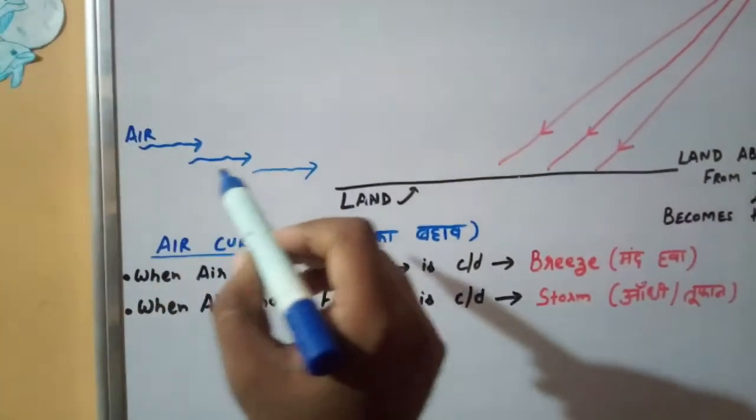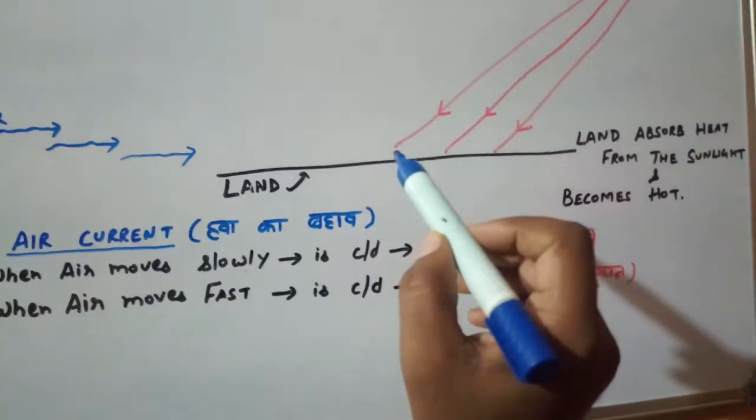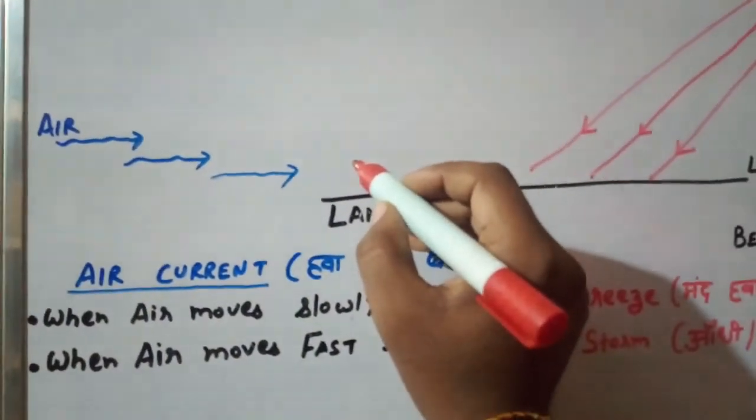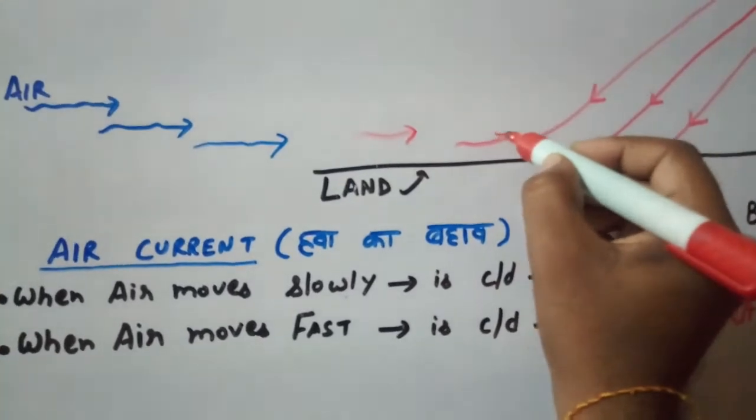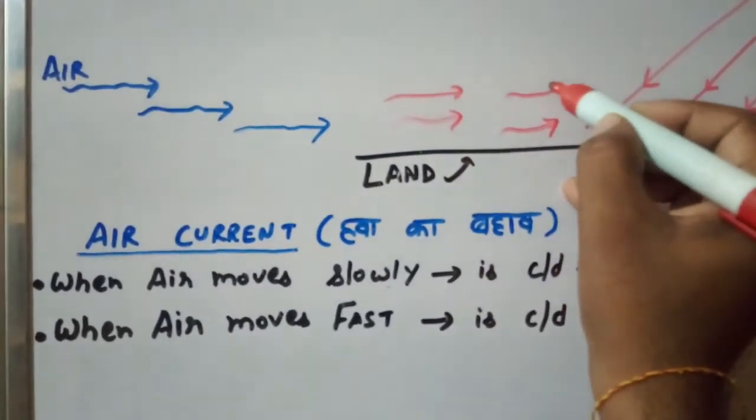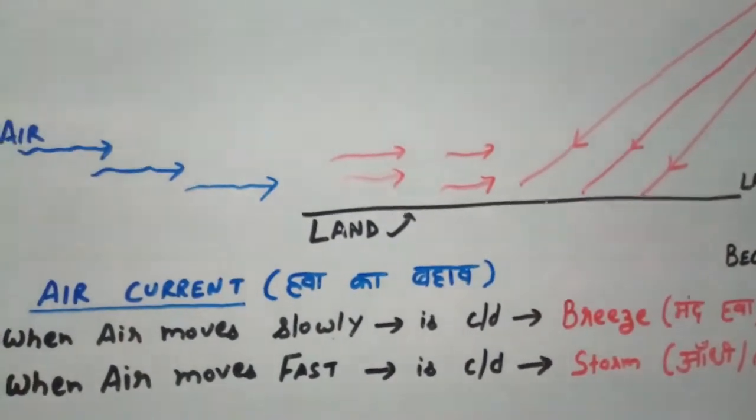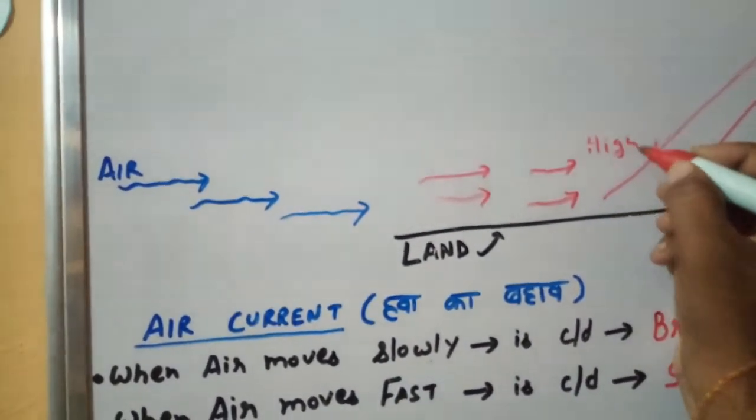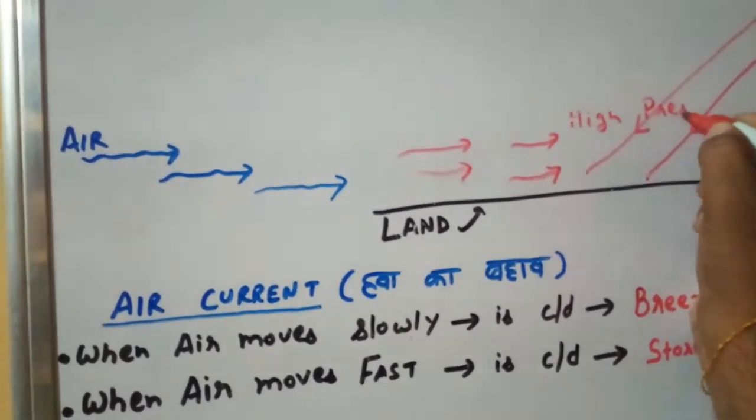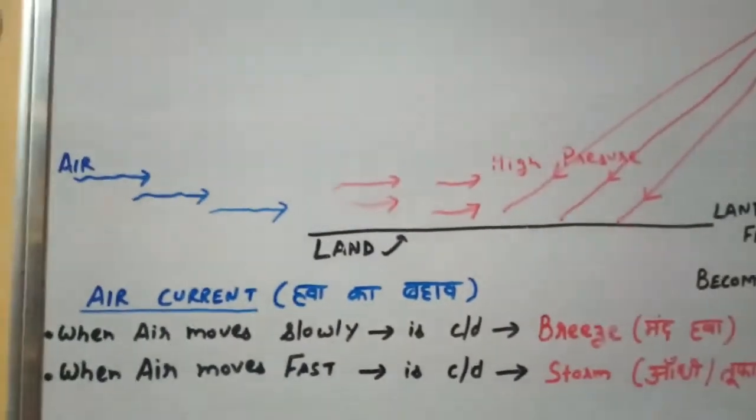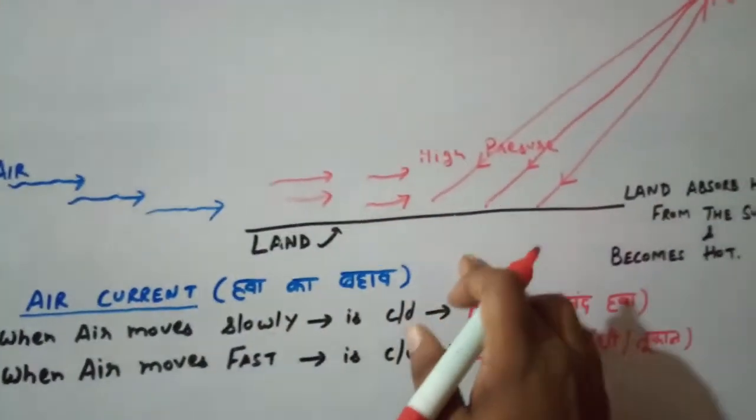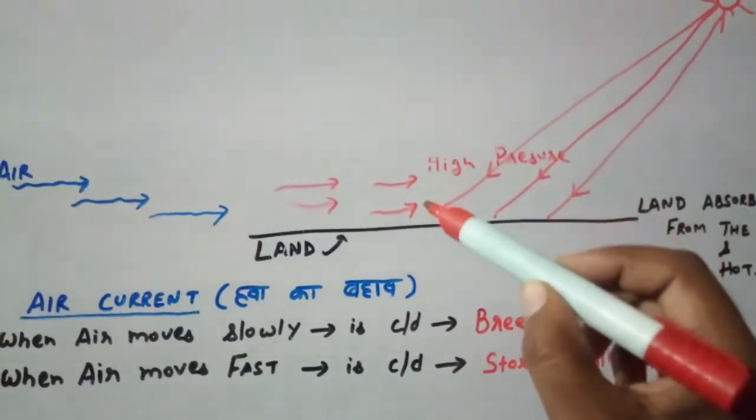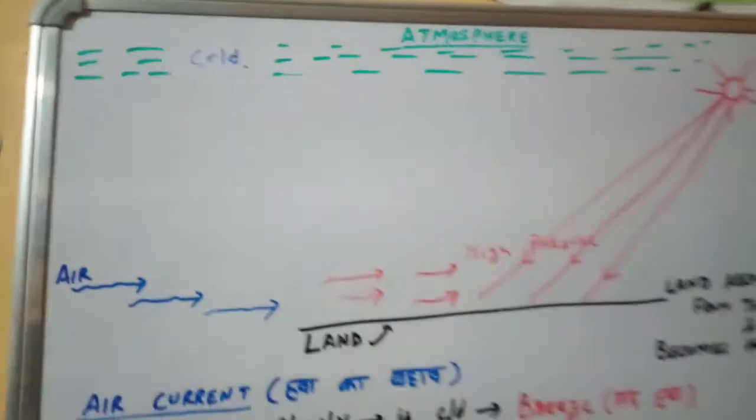So when the air comes in contact with the hot land, it also becomes hot. Due to this, a high pressure area is created on the land surface.